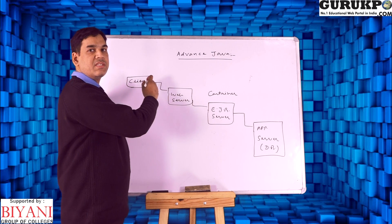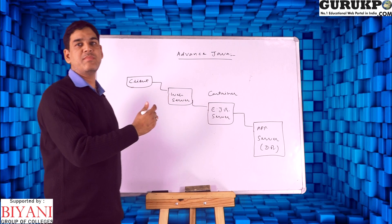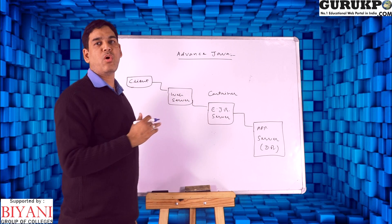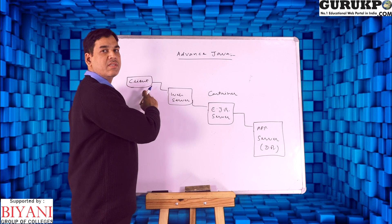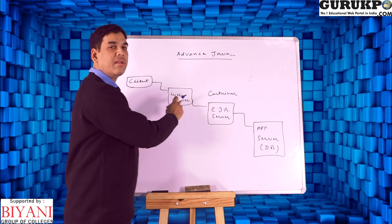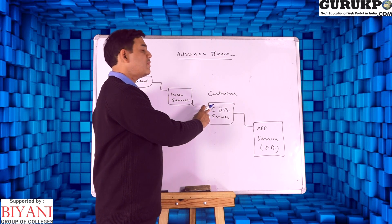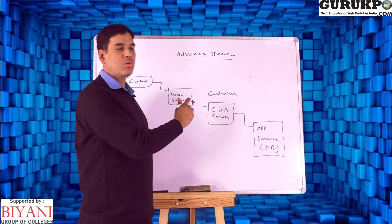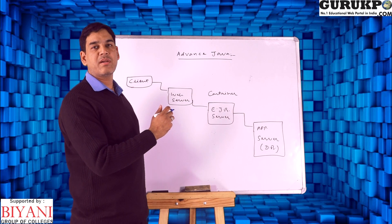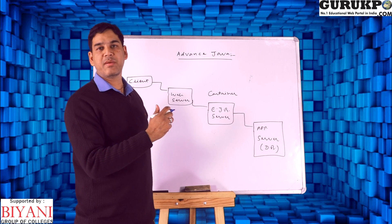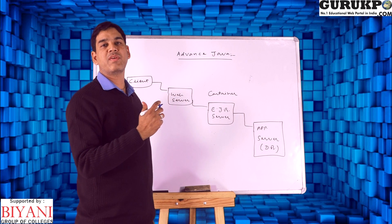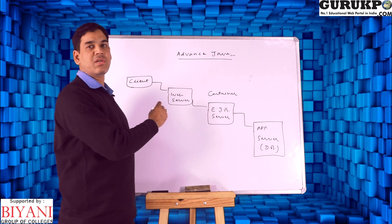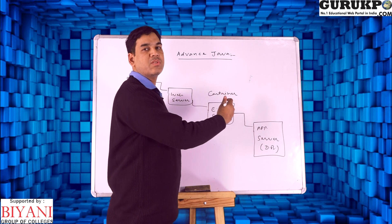Let's discuss the EJB architecture. We should know how the client sends information or a request to the web server, then the web server sends it to the EJB server. The EJB server is a container which has specific EJB beans and specific APIs. This proceeds further to the application server, which manages the database — which could be a distributed database, data mining, or data warehousing. This is how all information and messages flow from one place to another.